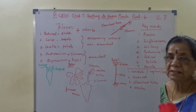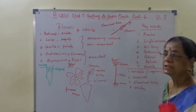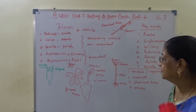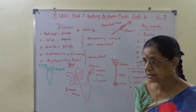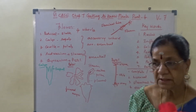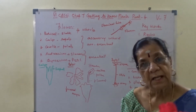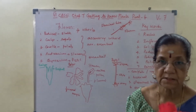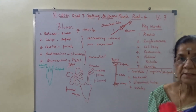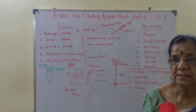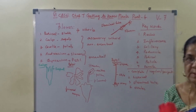Calyx is just protecting the flower in bad conditions. Corolla is meant for attracting insects during pollination. Whereas androecium and gynaecium are the reproductive parts of the flower — androecium has the male sex organ and gynaecium is the female sex organ.